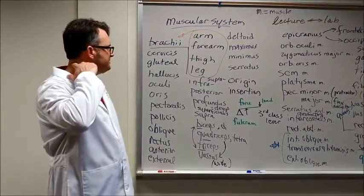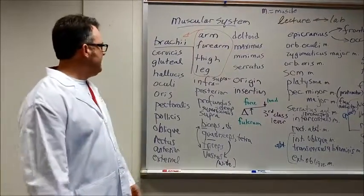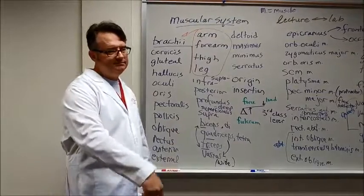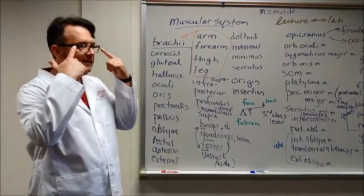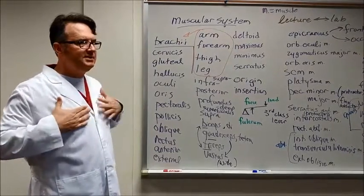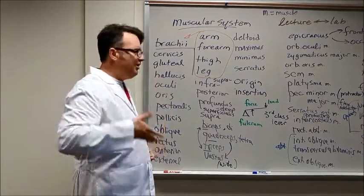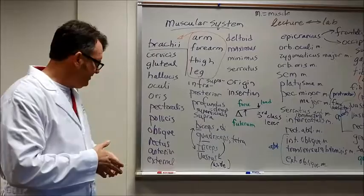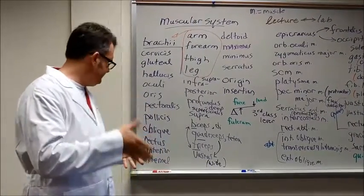Cervicis means neck. What does gluteal mean? Buttocks. And what does hallucis mean? Your big toe. What does oculi mean? Eye. Oris? Mouth. Pectoralis? Chest. Pollicis? Thumbs. Oblique means diagonal or across. Rectus or erect typically just means straight, that's what we think of in science.